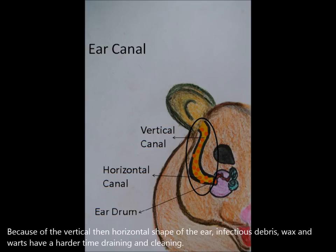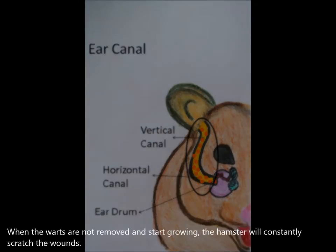Moving on to the physiology. Because of the vertical then horizontal shape of the ear, infectious debris, wax, and warts have a harder time draining and cleaning. This affects the ventilation of the ear canal, which causes the hamster to itch.